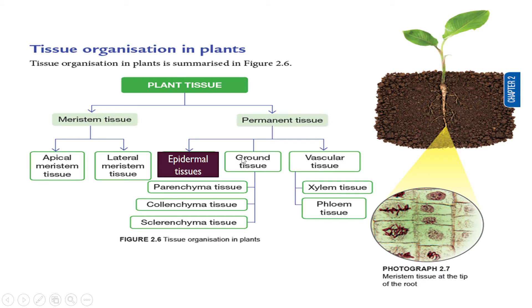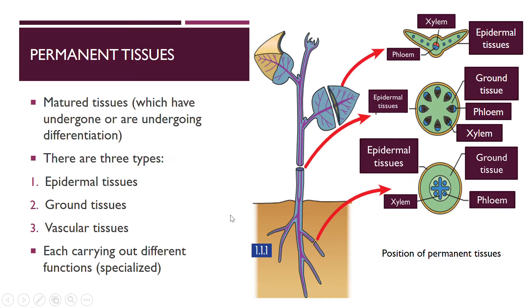The four permanent tissues are the epidermal, ground tissues, as well as vascular tissues — the one that you are familiar with. Xylem and also phloem tissue. For ground tissue, you have parenchyma, collenchyma, sclerenchyma. So a lot of new terms for you to remember. Let's look at permanent tissues — matured tissues, sudah mengalami differentiation.